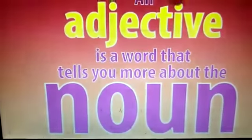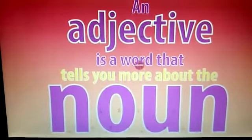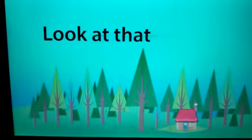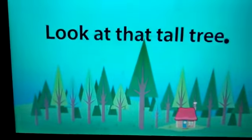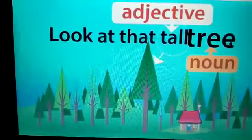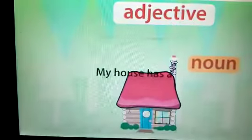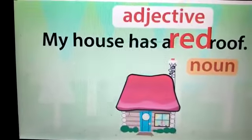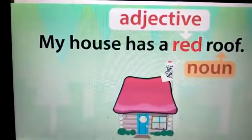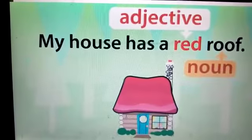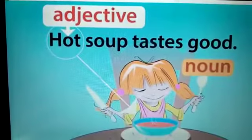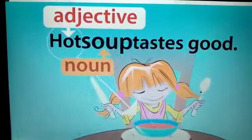An adjective is a word that tells you more about the noun. Look at that tall tree — 'tall' is the adjective that tells you that the noun 'tree' is tall. My house has a red roof — 'red' is the adjective that tells you that the noun 'roof' is red. Hot soup tastes good — 'hot' is the adjective that tells you that the noun 'soup' is hot.